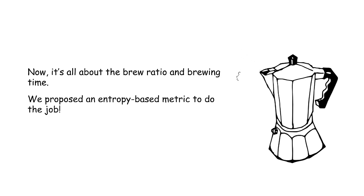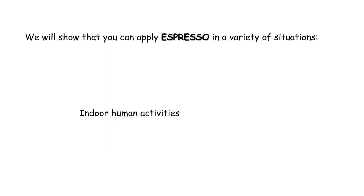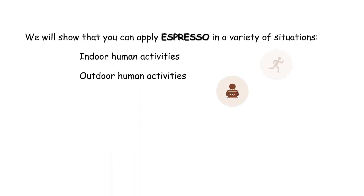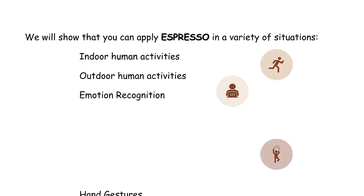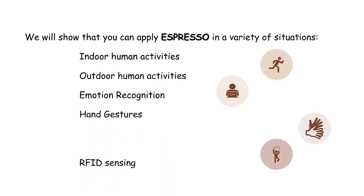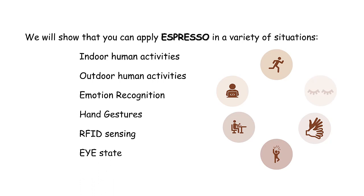Now it's all about the brew ratio and brewing time. We proposed an entropy-based metric to do the job. We will show that you can apply ESPRESSO in a variety of situations. Just like espresso is an effective and efficient way to consume caffeine, we show that ESPRESSO is effective in consuming high-dimensional multivariate time series. It discovers segments in these datasets and is agnostic to the underlying semantic or annotation.